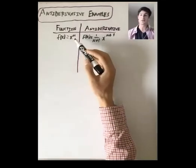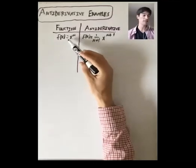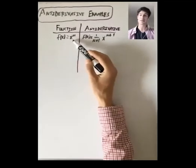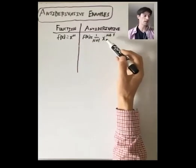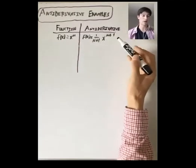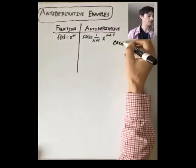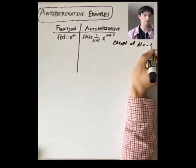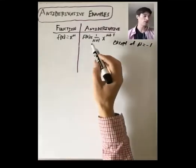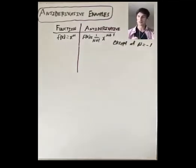In the last video, we saw our first example. Using the power rule for differentiation, you can see that if f(x) equals x to the n power, then an antiderivative is 1 over n+1 times x to the n+1 power. This is except at n equals minus 1, which is a special case we'll come back to, where we would be writing 1 over 0 times x to the 0. That's a special case we'll talk about in the next video.